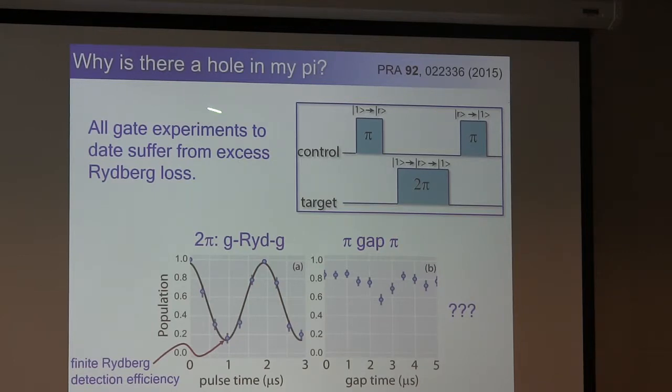But then we have this, what I call hole in my pi, which is when we do this thing on one atom, pi gap pi, we have an extra 15 to 20 percent loss. And that's sort of our 15 percent that's missing in the gate fidelity in some sense. So why is that? And what we found is that even though we make the gap between these two square pulses as short as possible, we still see a difference between pi, short gap pi, and just the continuous driving. So a couple of thoughts about that.